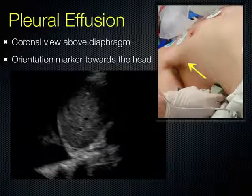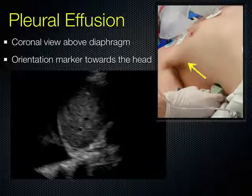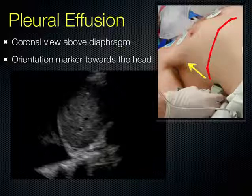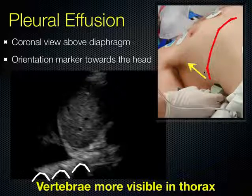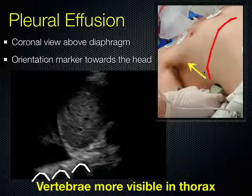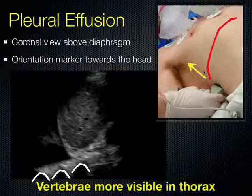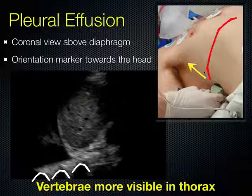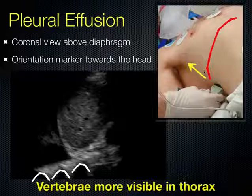Next, we're going to talk about pleural effusions. Here we choose the coronal orientation with the indicator towards the head and the low-frequency probe for a deeper view. Place your probe at the interface where the diaphragm separates the thoracic from the abdominal cavity. You'll notice that vertebrae are more visible in the thorax when pleural fluid is present, because pleural fluid conducts ultrasound beams while air does not. Structures deep to the fluid are enhanced — this is called posterior acoustic enhancement. Without fluid and with air, you cannot see those vertebral bodies.